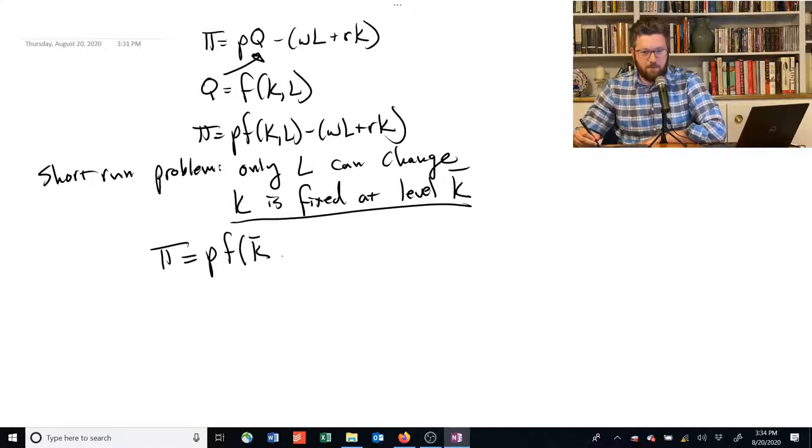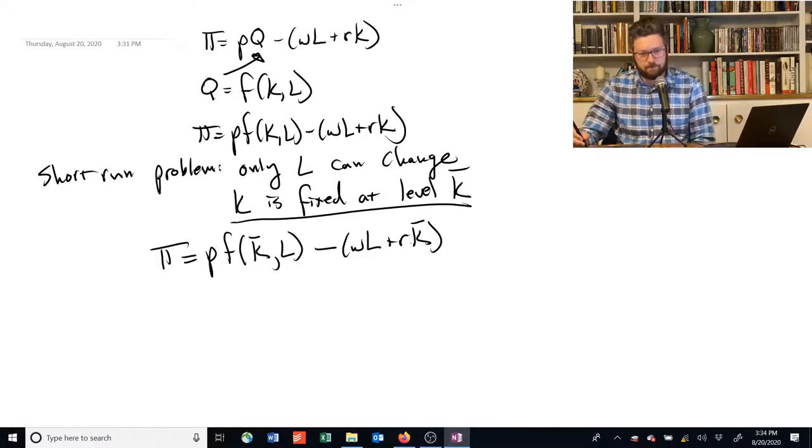And we're going to substitute in now this information and say that the profit is equal to the price times my production function. My production function capital stock is stuck at K bar. My labor is free. That's a choice. Minus WL plus R. And we're going to add a bar over that K too. So the only thing we have to choose is labor.